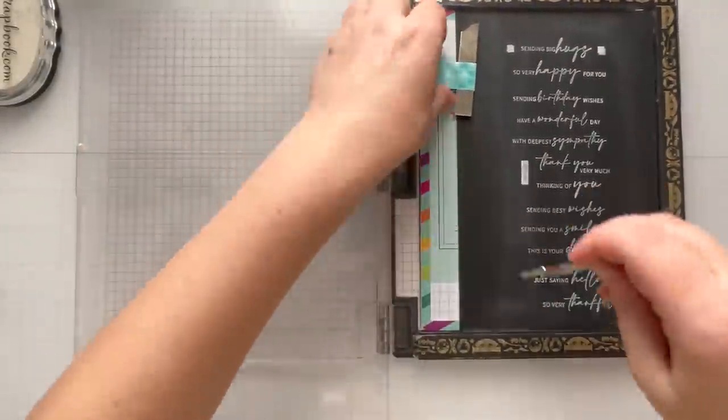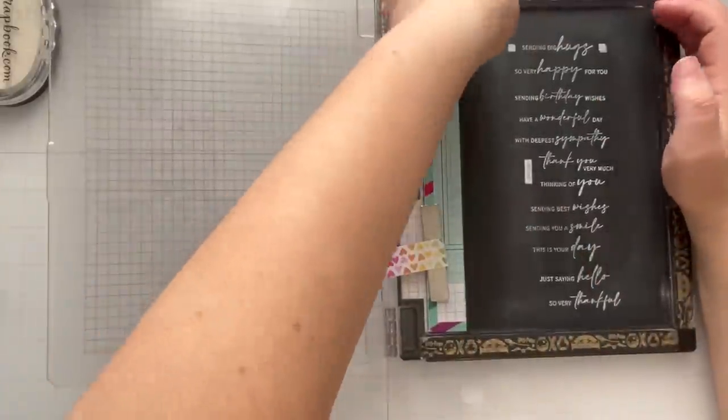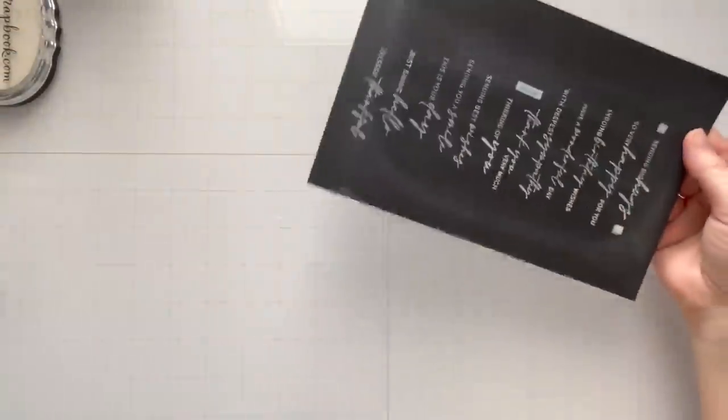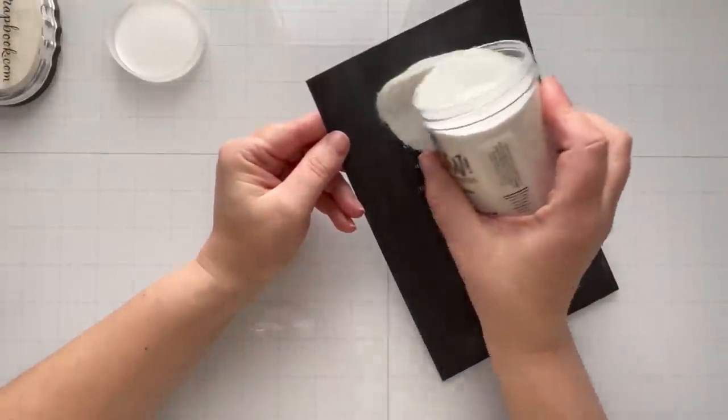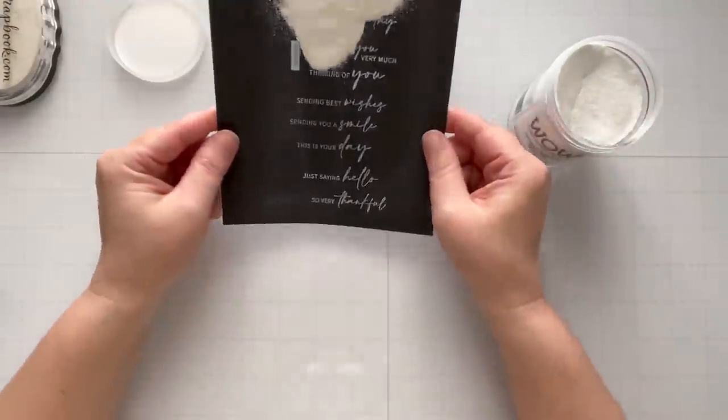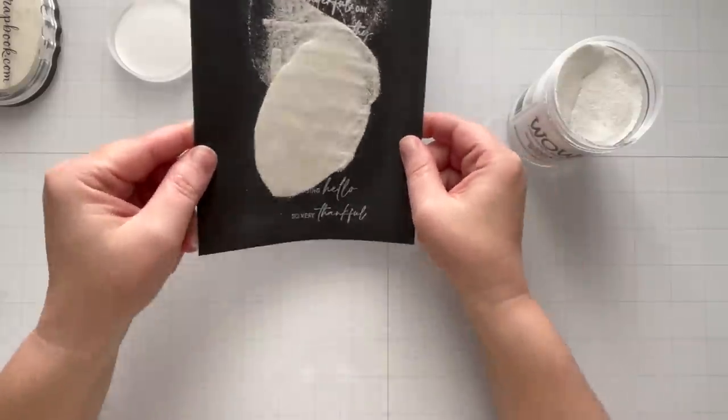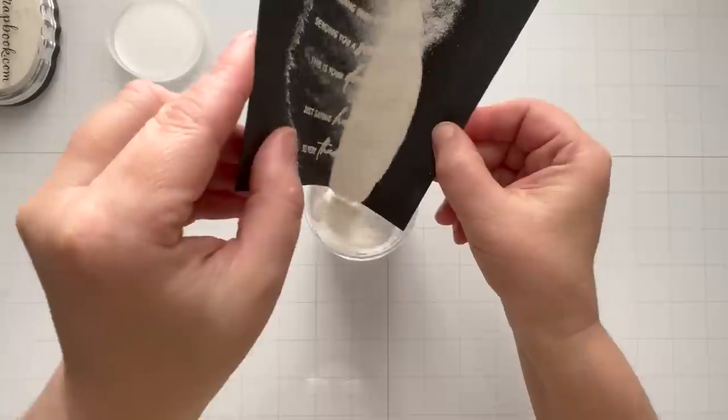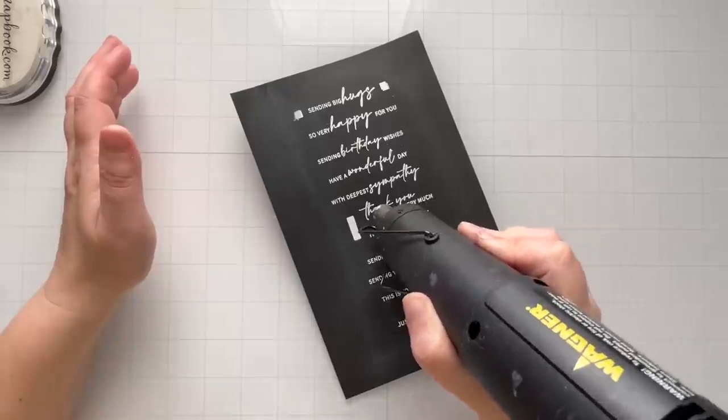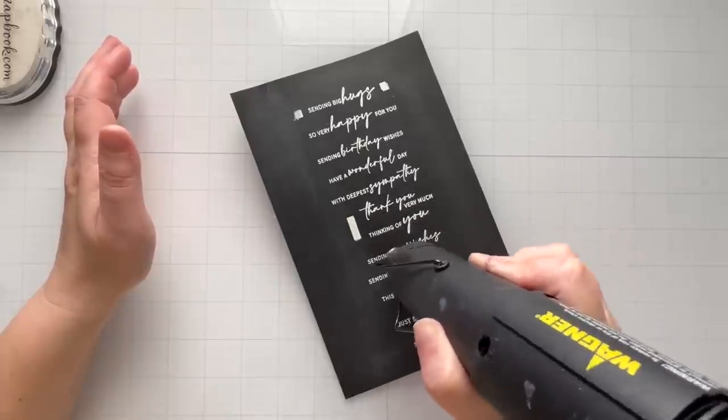But again, if you're using just a regular sentiment stamp, then you don't have to do all these steps. But I just really think this is quite unique how she mixes the fonts and stuff together. And then it has a coordinating die as well. So before I get to that, let's go ahead and heat emboss this. So when I'm white heat embossing, I always use Wow Superfine. Superfine is key, especially with sentiment stamps because you want that superfine powder so it doesn't look all thick and clumpy when you go to heat set it.